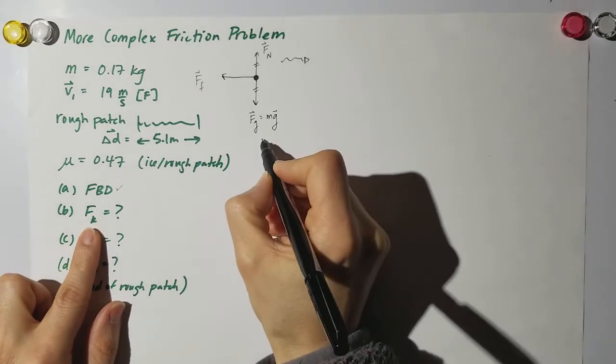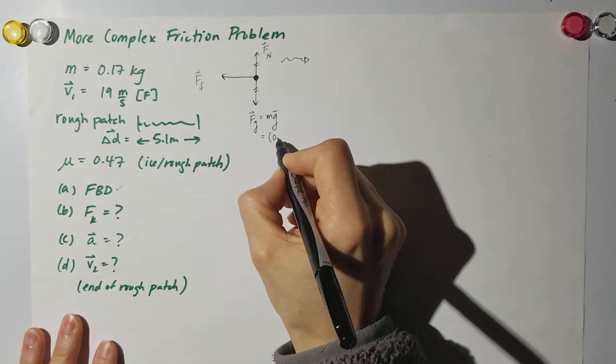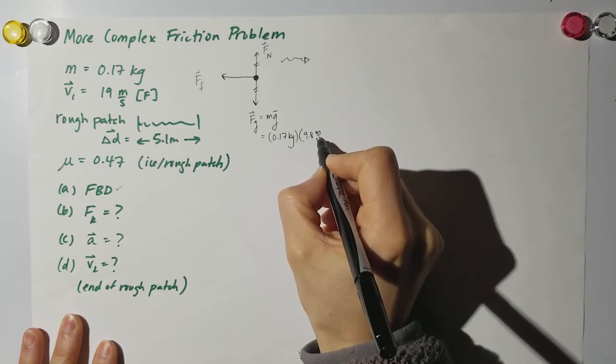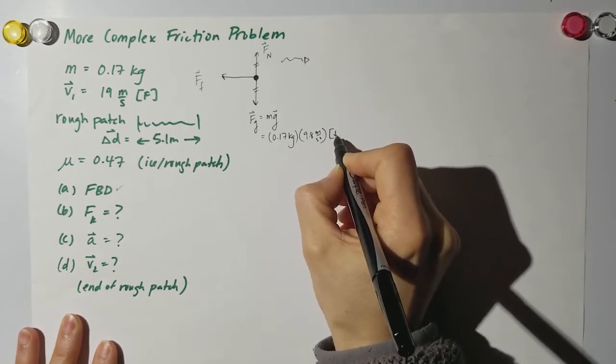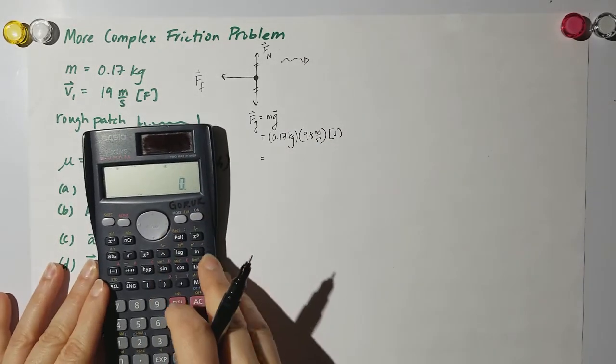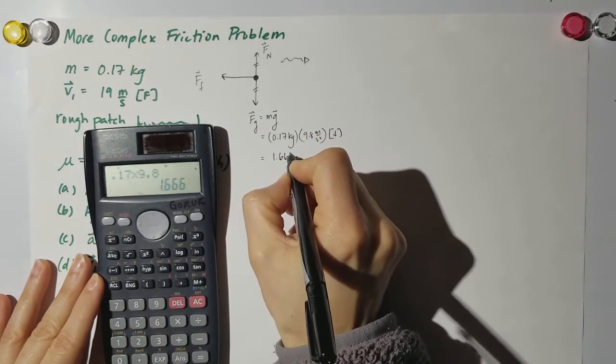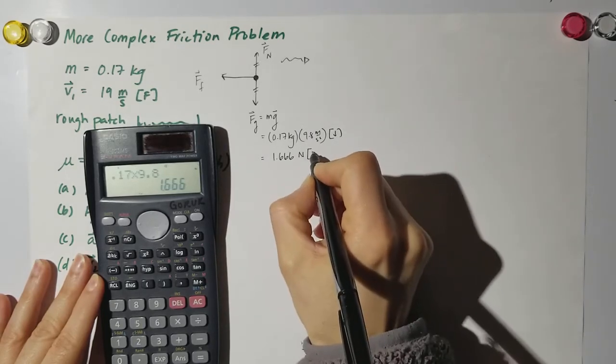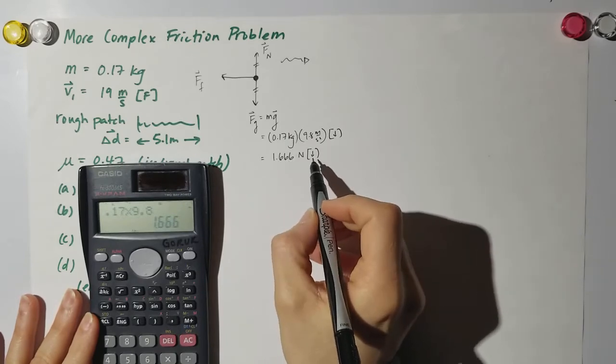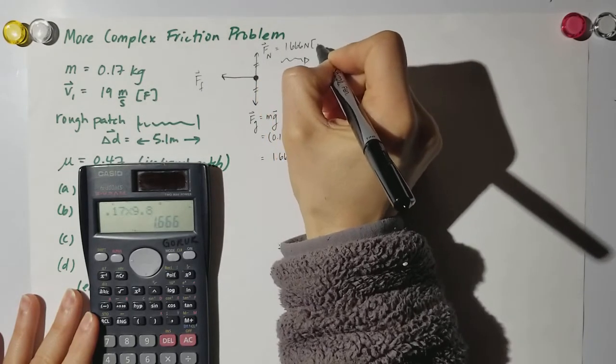On our FBD we could also calculate the force of gravity. So I know my mass is 0.17 kilograms and G is 9.8 meters per second squared. We know that this is down. So go ahead and grab your calculator and put that in: 0.17 times 9.8, and I get 1.666. Oh fun number. And that's down. So since we know the force of gravity is 1.666 Newtons down, that means we know that the normal force is 1.666 Newtons up.